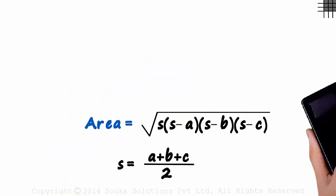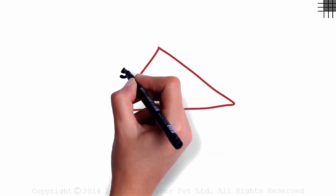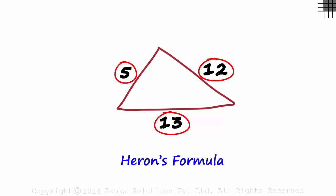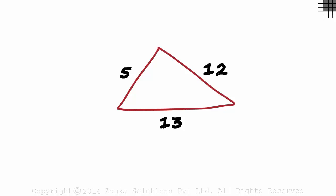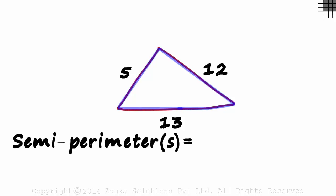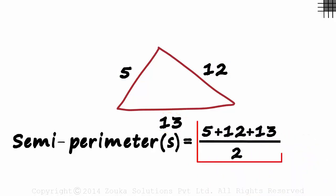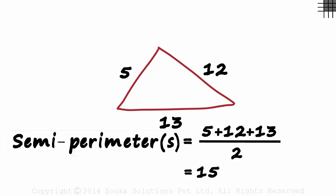Here's a typical problem that you may come across in your exams. We are given a triangle with lengths 5, 12, and 13 units and are asked to find its area. As we are given the lengths of all three sides, we can use Heron's formula. The first thing we need to find is the semi-perimeter: 5 plus 12 plus 13 divided by 2 equals 30 by 2, which equals 15.